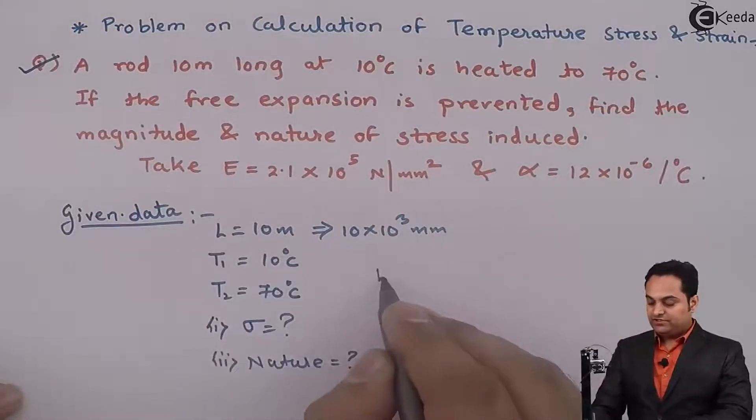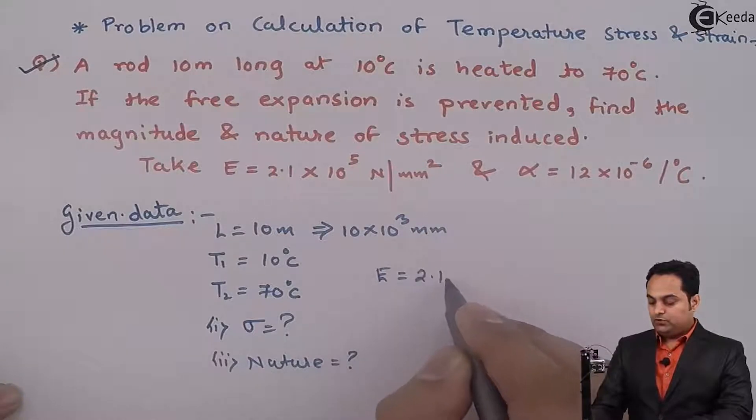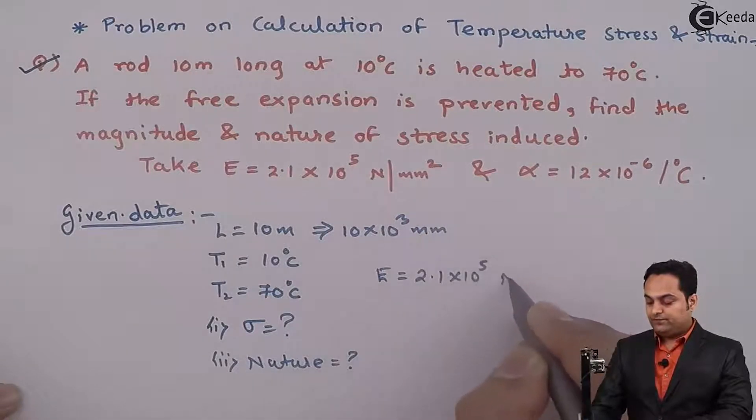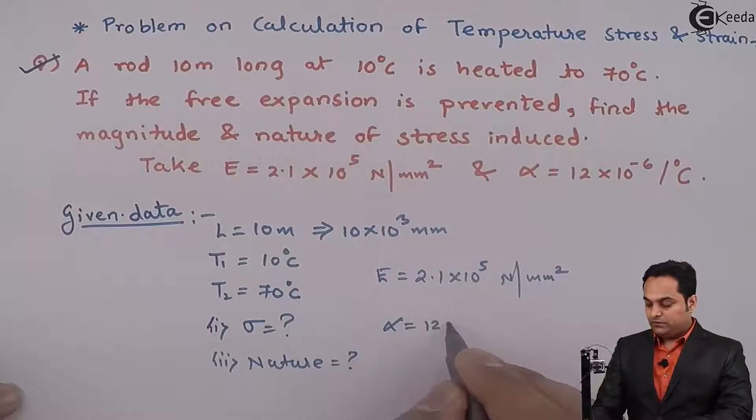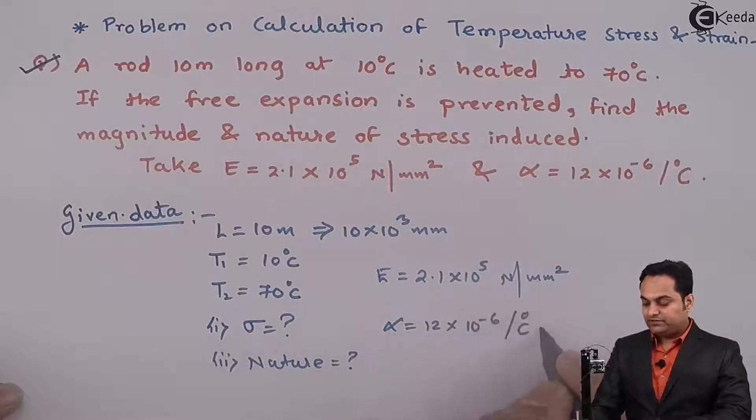Young's modulus E is given, 2.1 × 10⁵ N/mm² and alpha value, 12 × 10⁻⁶ per °C.